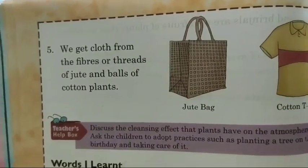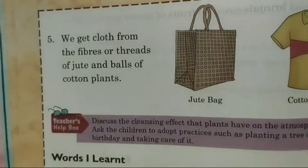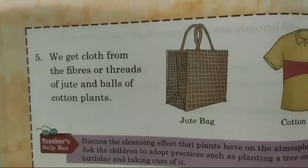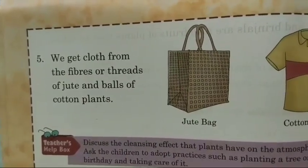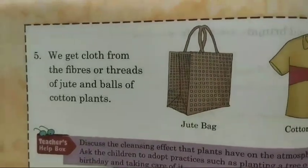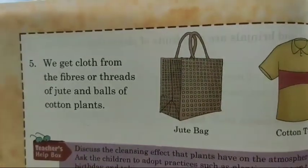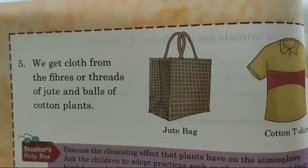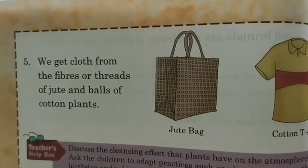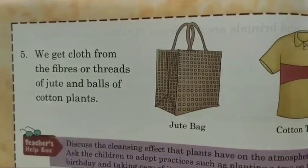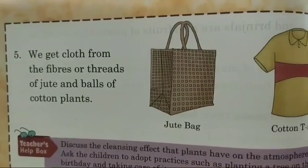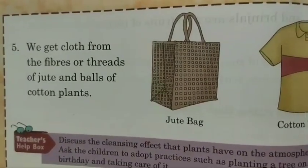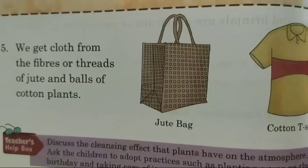Point 5 is on page number 54. We get clothes from the fabric or thread of jute and balls of cotton plants. Our clothes are also made with the help of plants — jute and cotton. Cotton grows on the cotton plant. With the help of cotton, we can make thread and then cloth. You can see this jute bag and a cotton t-shirt — these are also due to the help of plants.